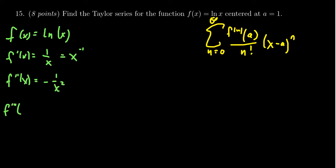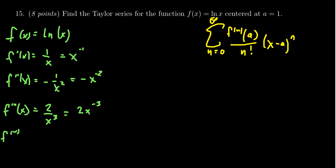We need to calculate enough derivatives to identify the pattern. The third derivative: differentiating negative x to the negative two gives us positive two x to the negative three, or two over x cubed. Continuing, the fourth derivative gives us two times three, which is six, giving us negative six over x to the fourth. Then the next one gives us one times two times three over x to the fourth.